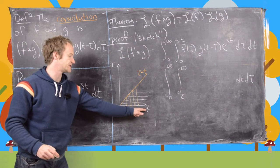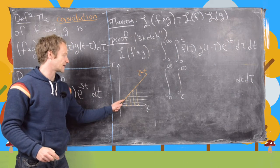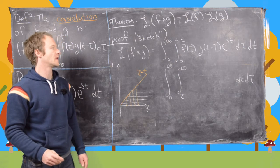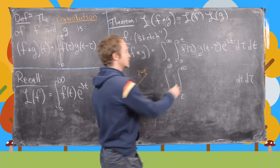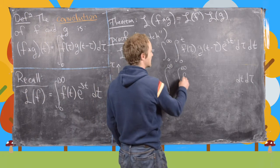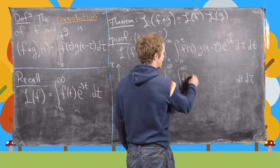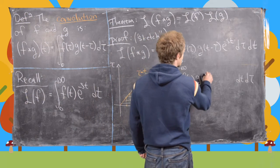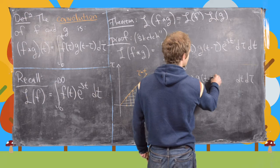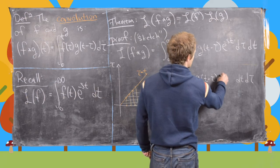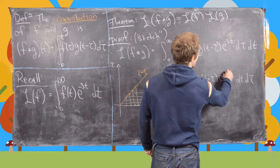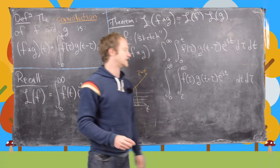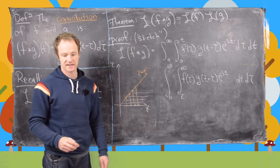Notice that t is going from tau to infinity. We can now rewrite this as f of tau times g of t minus tau times e to the minus st, with dt d tau.